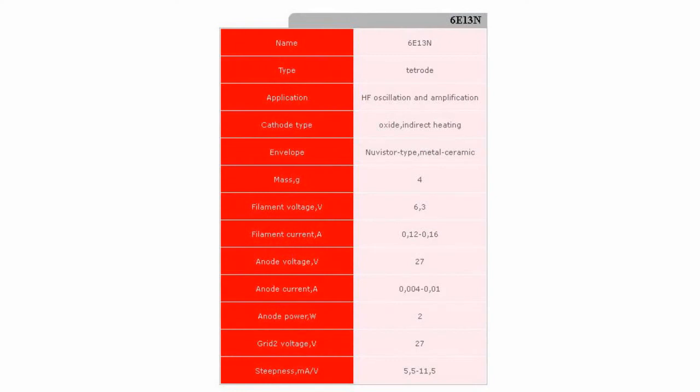Gain slope is 8.5 mA/V, which is considerably higher than the gain slope of field transistors with isolated gates. Maximum long-term input grid voltage is 70V.